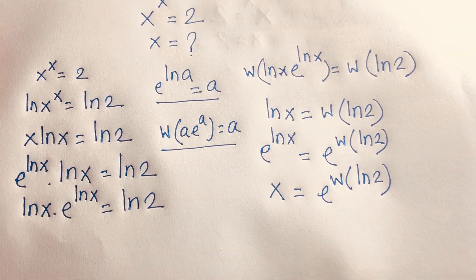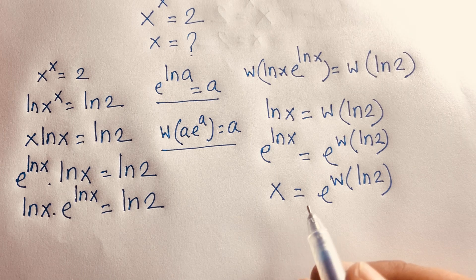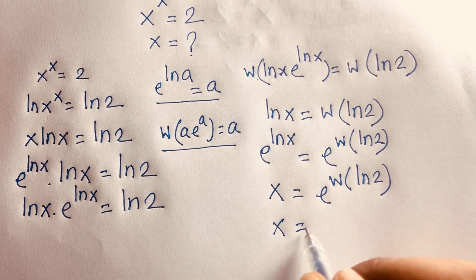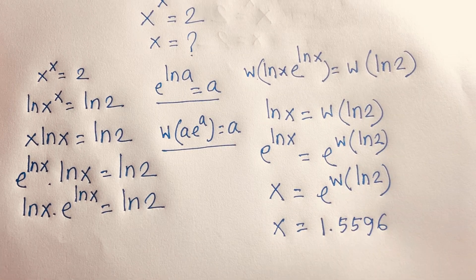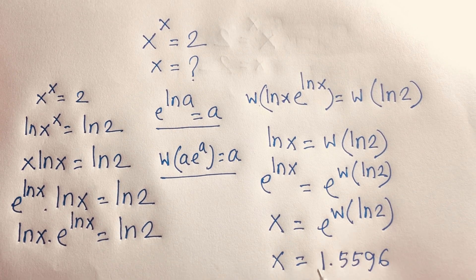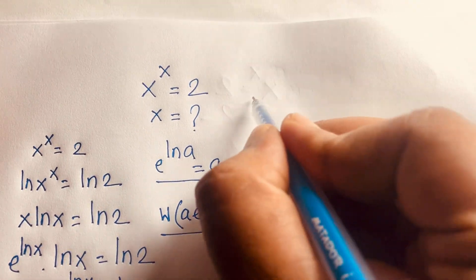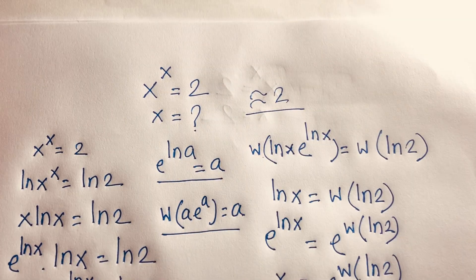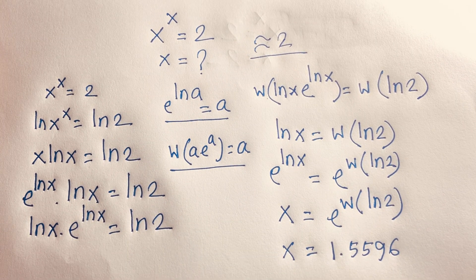Using Wolfram Alpha to evaluate this, we find x is approximately 1.5596. We can verify: 1.5596 to the power 1.5596 equals 2. Thank you all — if you enjoyed this video please subscribe to my channel for more interesting videos. Goodbye, take care!